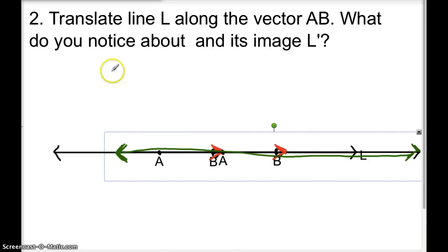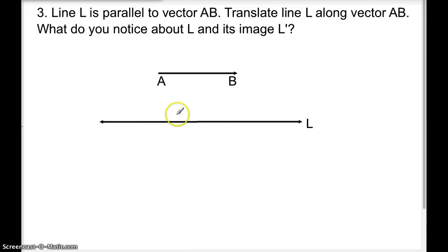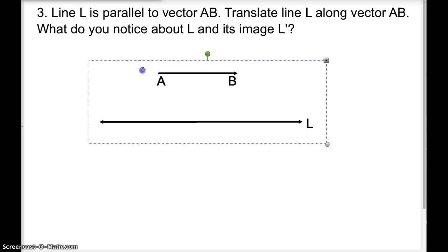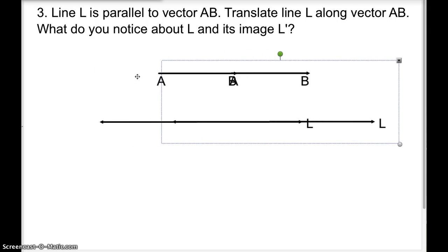Flipping to the back, number three: line L is parallel to vector AB. Translate line L along vector AB and notice what happens. The vector tells us we're moving the line to the right, and the length of the vector tells us how far. Trace line L and the vector onto your paper, then slide so the end of one vector lines up with the head of the other.